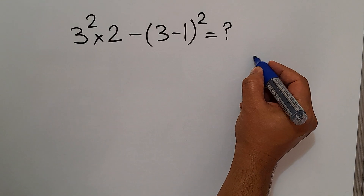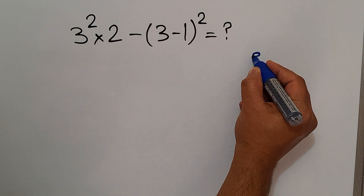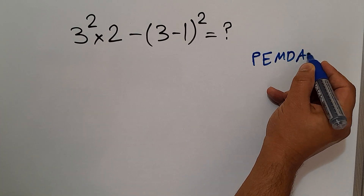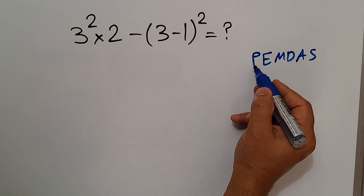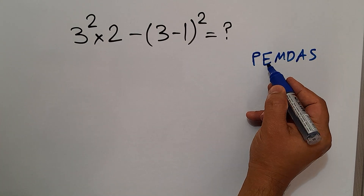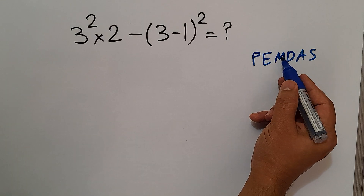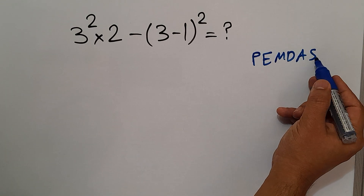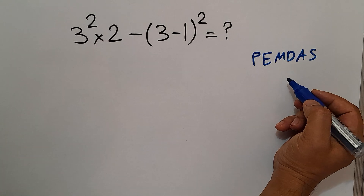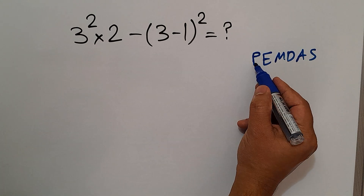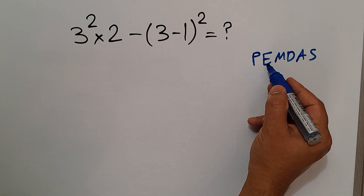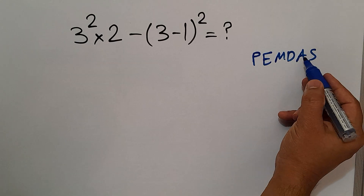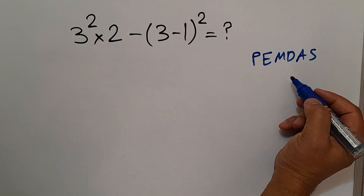According to the order of operations, which is PEMDAS: P stands for parentheses, E stands for exponents, M and D stand for multiplication and division, and A and S stand for addition and subtraction. We first do parentheses, then exponents, then multiplication and division, and finally addition and subtraction.